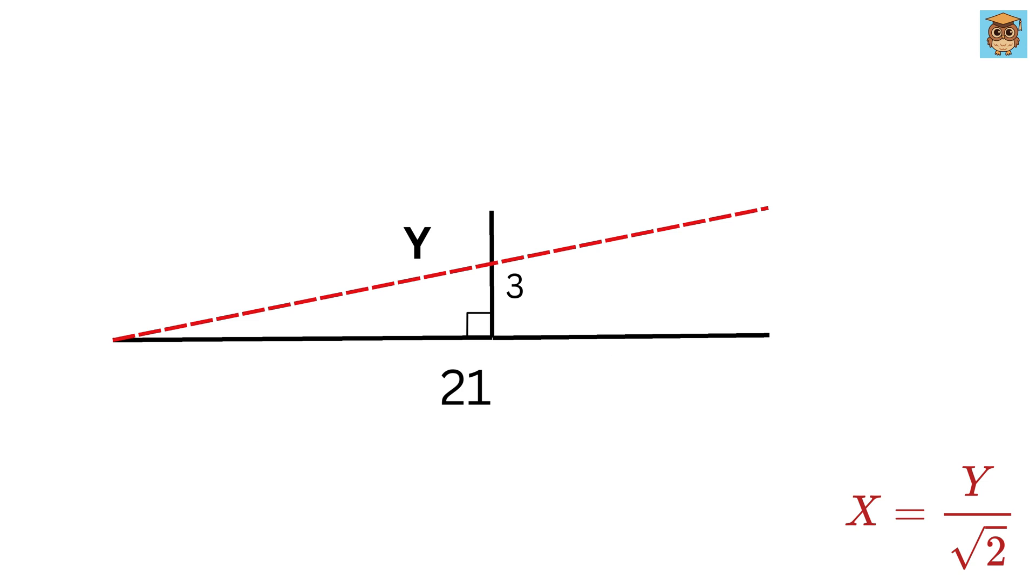So this total length will be 12 plus 9 or 21 units. Then move this side which is of length 3 units on the right side like this to complete this right triangle.